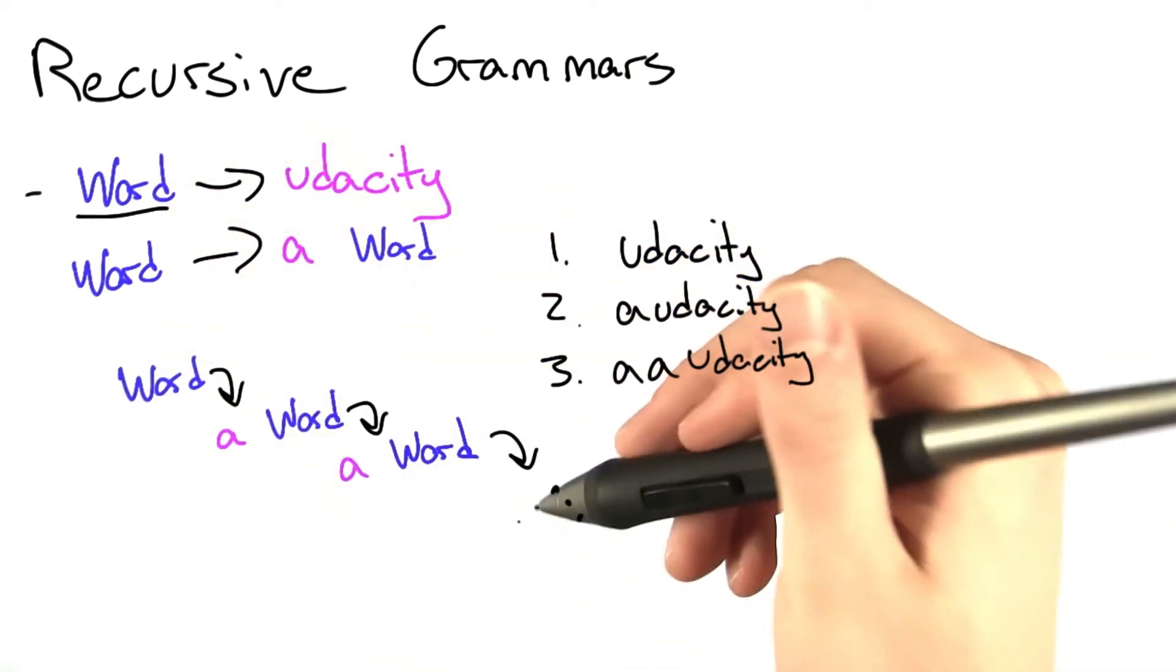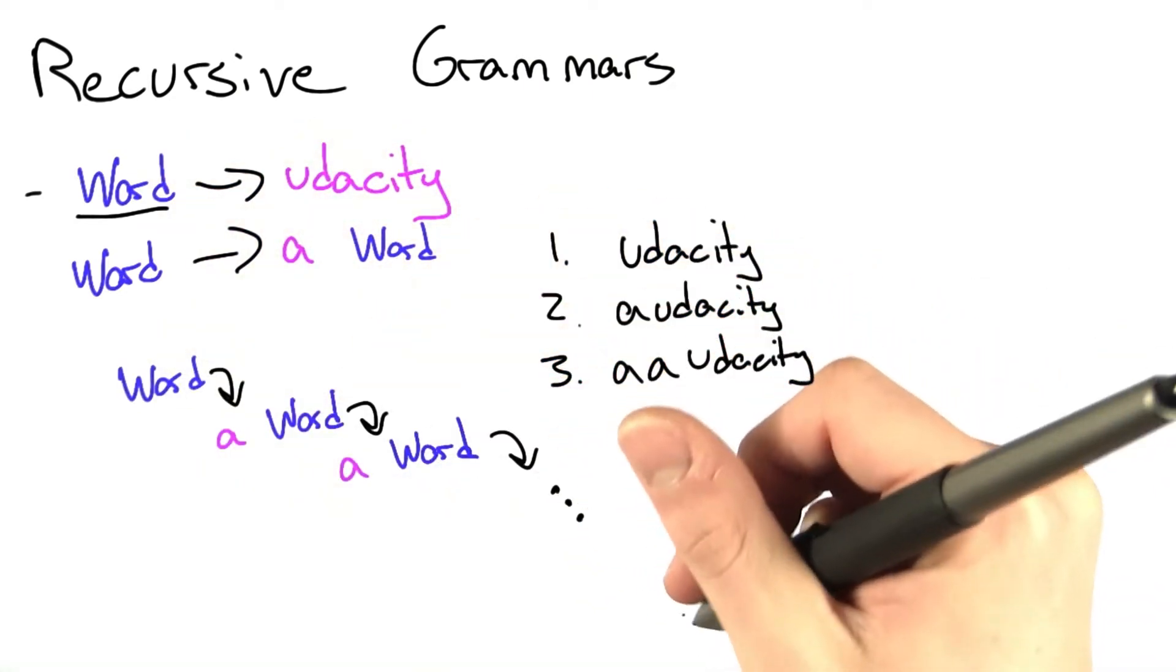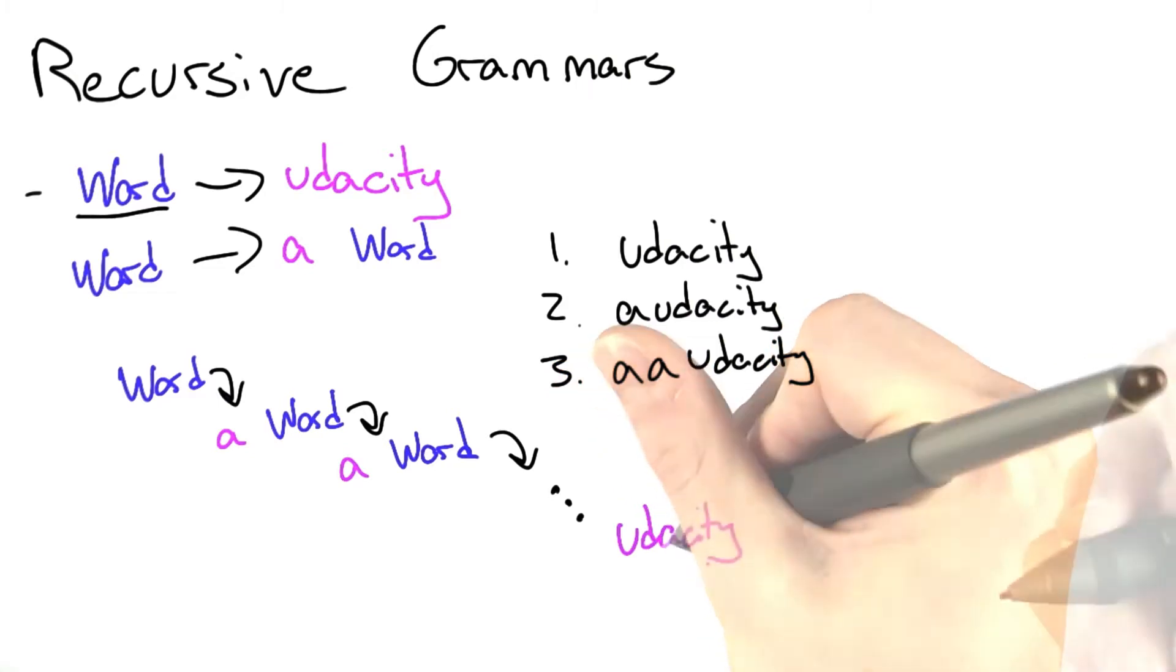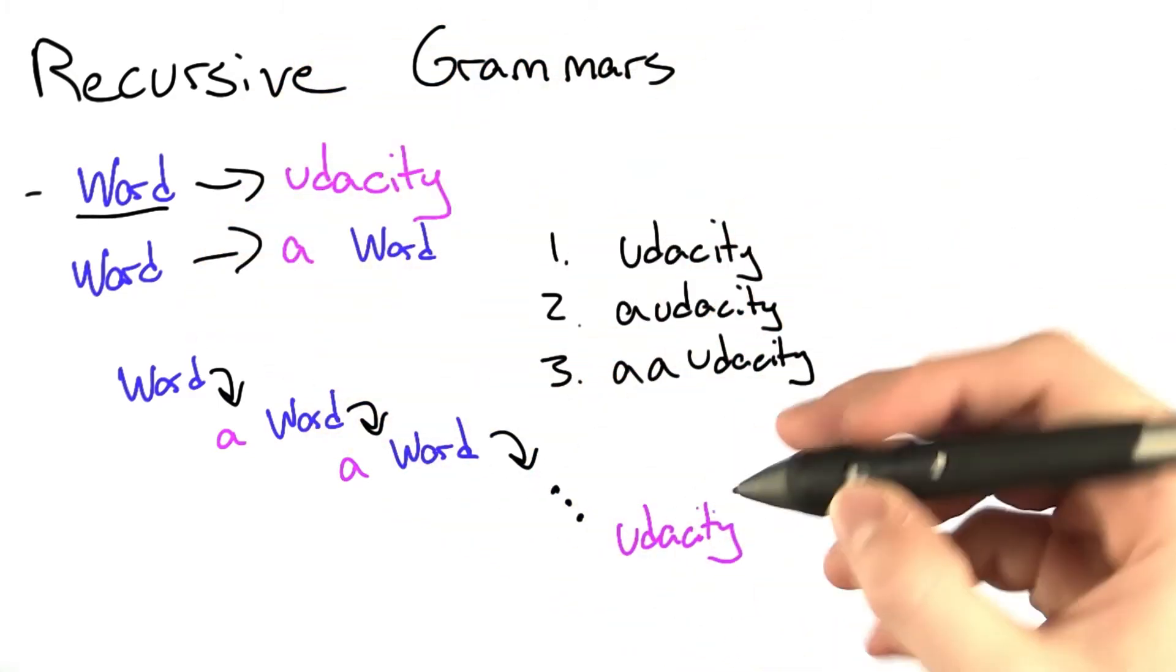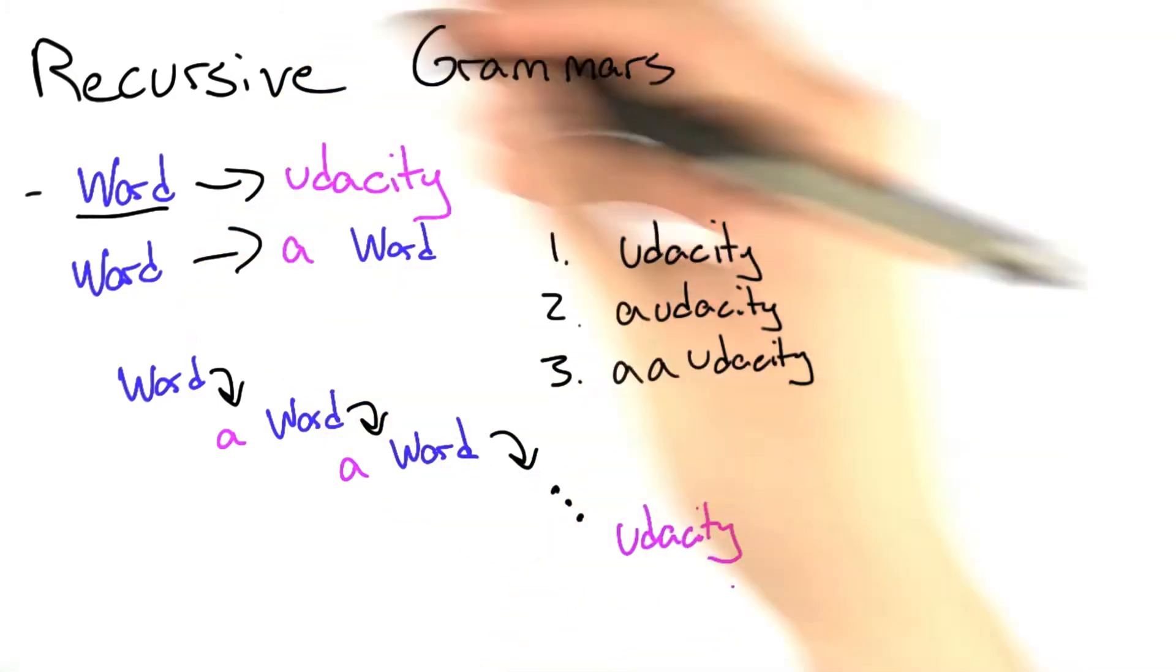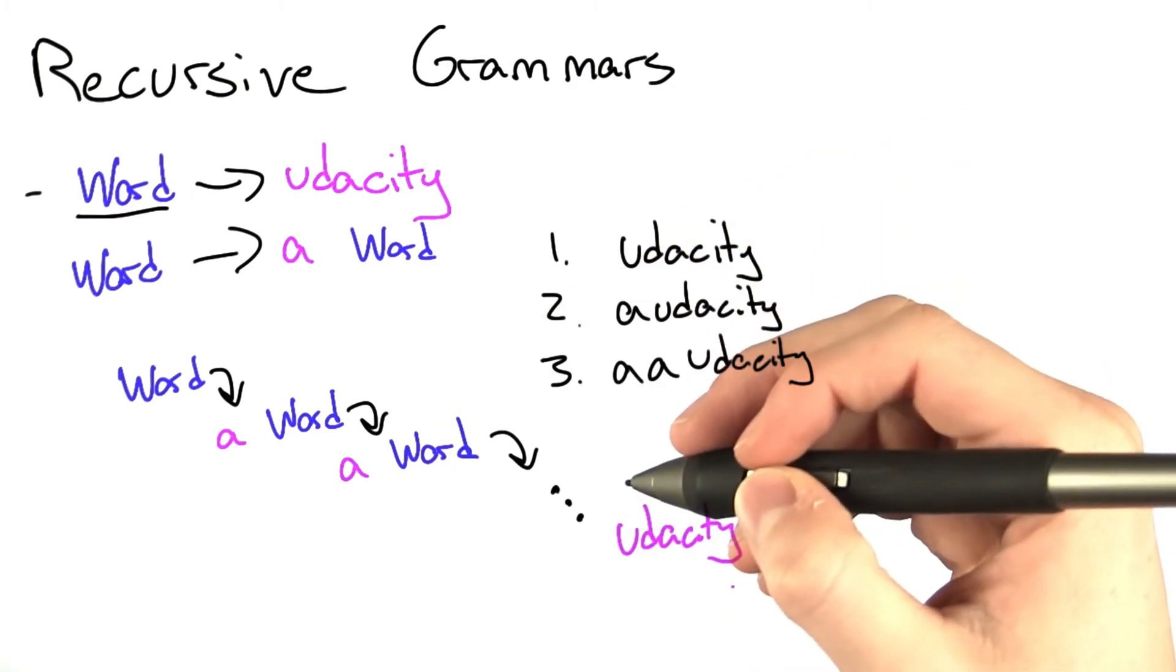And it should be pretty clear that we can continue this forever and eventually end with Udacity. So we can have an arbitrary number of A's followed by Udacity. This indicates that this grammar generates an infinite number of possible words.